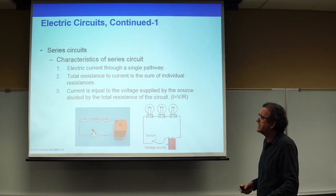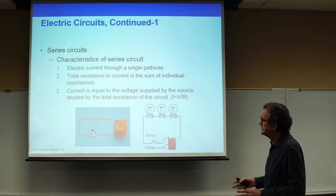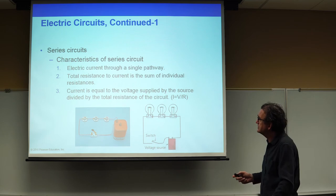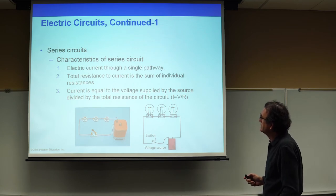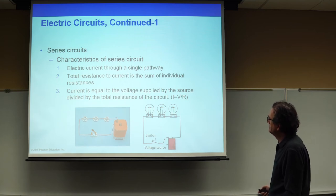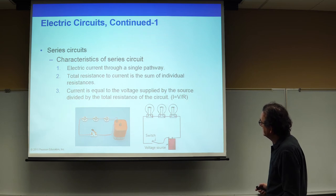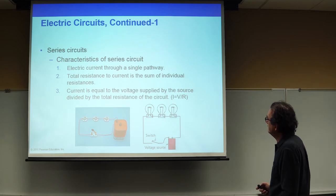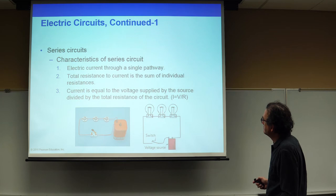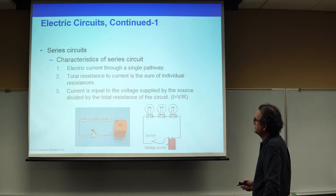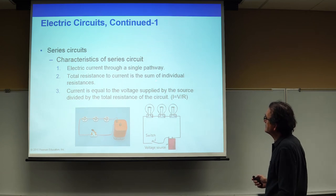In one of the final topics of this chapter, we're going to talk about two types of circuits: the series circuit and the parallel circuit. The characteristics of the series circuit have three properties. First, the electric current flows only through a single pathway — as soon as you close the switch, you have a continuous conductor from the positive terminal of the battery to the negative terminal, and the current can only flow along the path shown by the wires. The total resistance to current is the sum of the individual resistances.